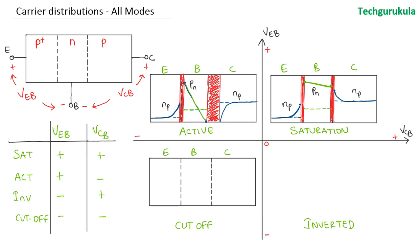Now coming to the cutoff region, both the junctions would be reverse biased, hence the depletion region widths would be higher on both sides. As these are reverse biased, the minority carrier concentration near the junction edge would be zero. Hence the distribution would be like this on the emitter side, and similarly on the collector side as well. In the base region near this depletion region, it should be zero, and as the width is very small, the carrier concentration would be almost zero.